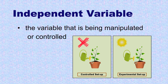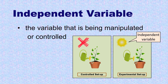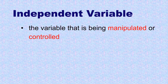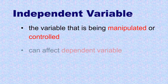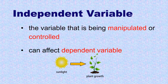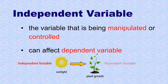So, the manipulated variable is sunlight, which is the independent variable. Also, the independent variable is expected to affect the dependent variable. In this example, the independent variable, which is the sunlight, is expected to affect the dependent variable, which is the plant growth.